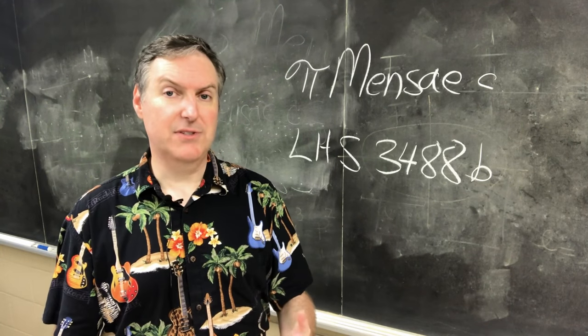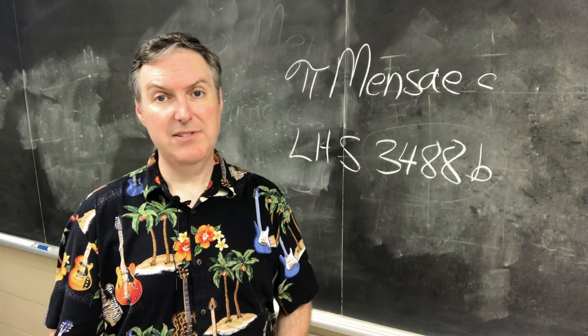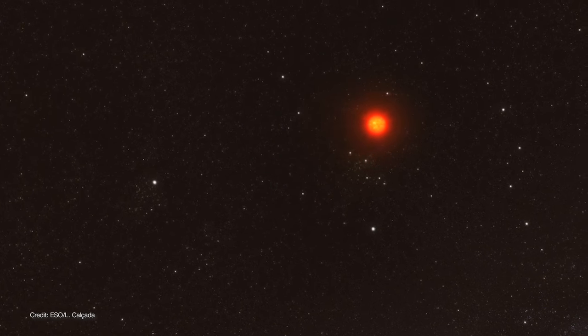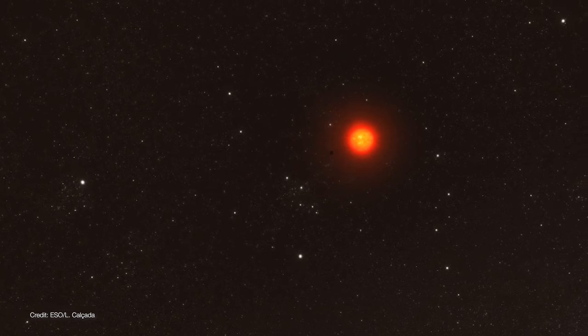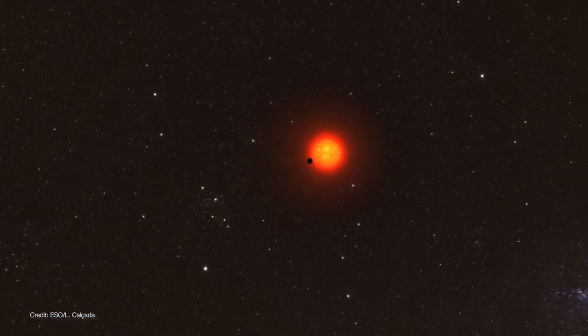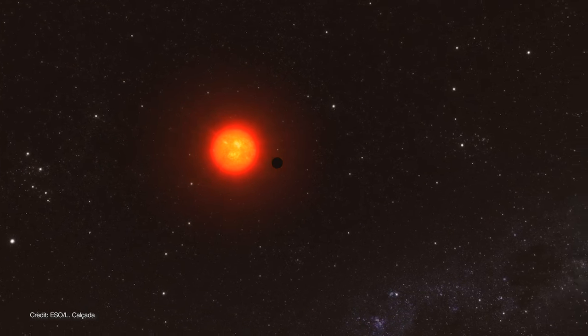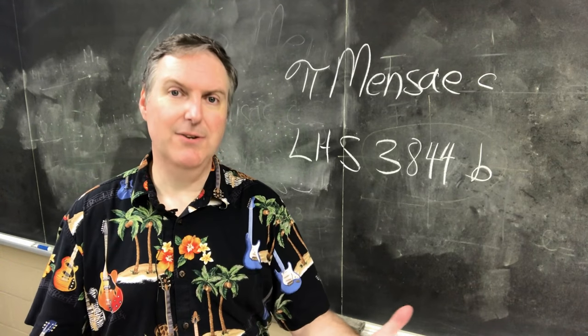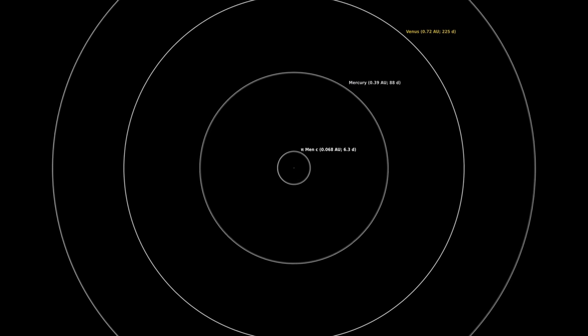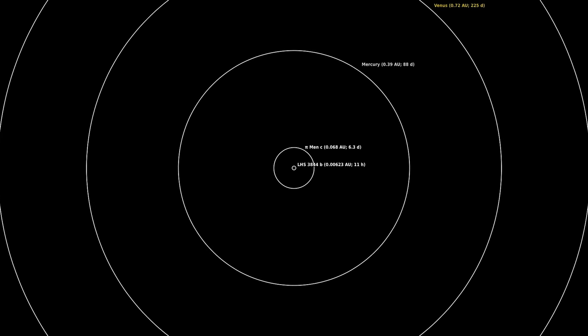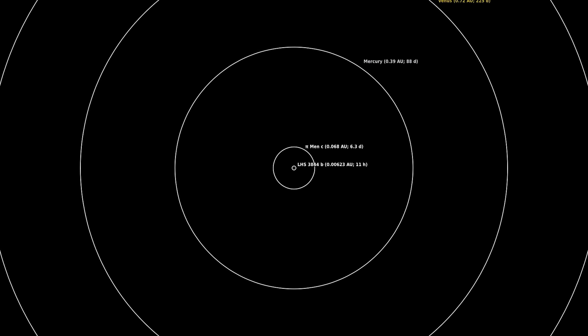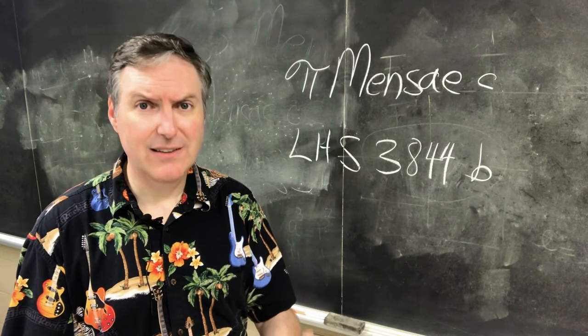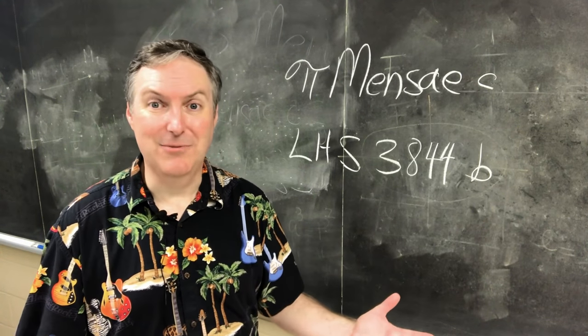But the second planet that was discovered is even stranger than Pi Mensa C. LHS 3844 b orbits around a red dwarf star. That is, it's a star that is smaller and cooler than our Sun. However, LHS 3844 b's period is only 11 hours. That's its year. That puts this particular planet at something like 0.006 astronomical units, or one-six-thousandth the distance from the Earth to the Sun. Crazy, right?